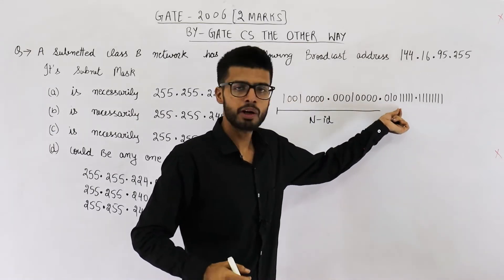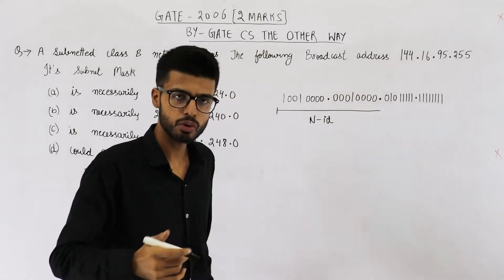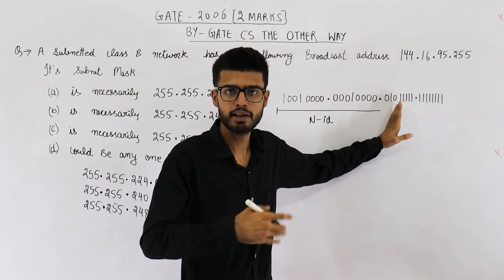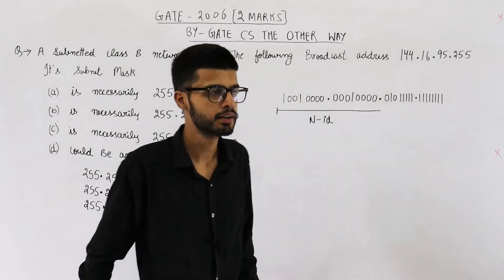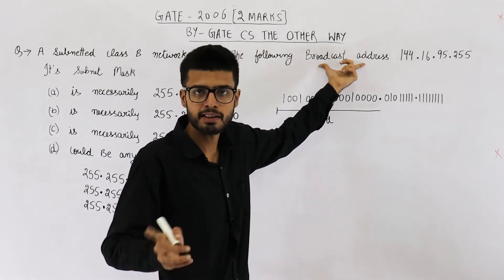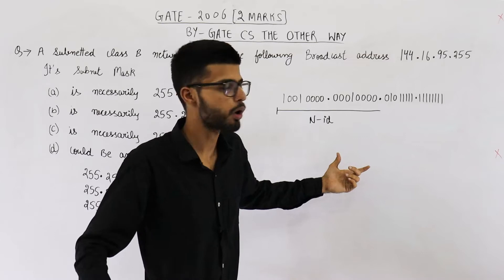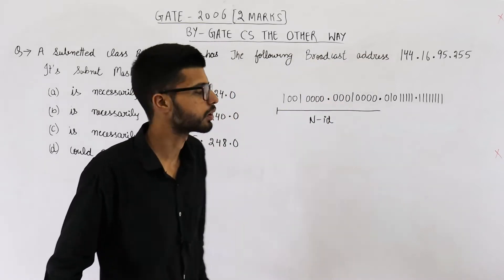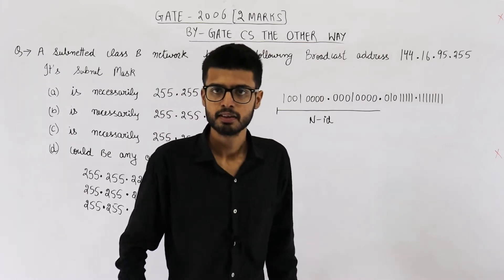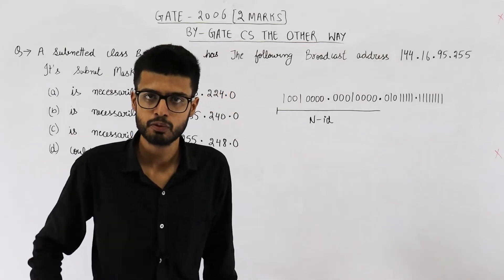Some bits are borrowed from the host ID part and they can be considered as the subnet ID. So this network ID extends beyond these two octets. Till which point the bits are borrowed, we don't know yet. We don't know what part is the network ID and from where the host ID begins. Now, they are saying this address is the broadcast address of the network — it is not the network address, it is the broadcast address. What is special about a broadcast address?